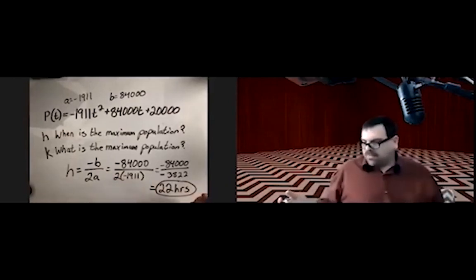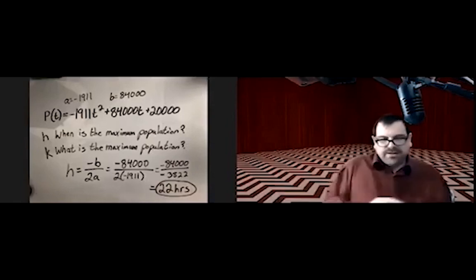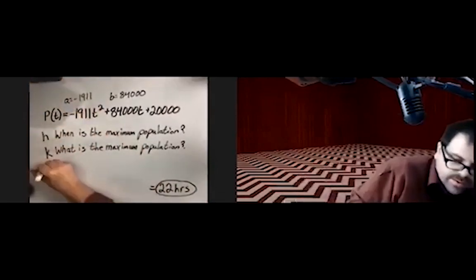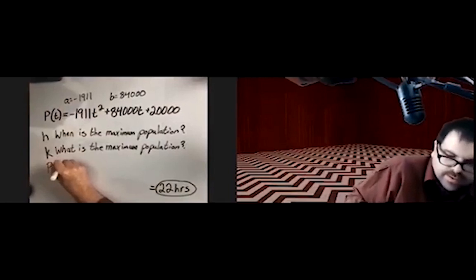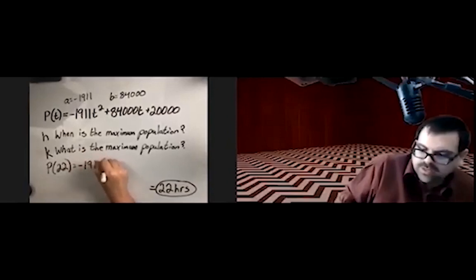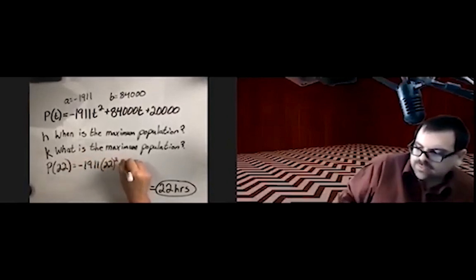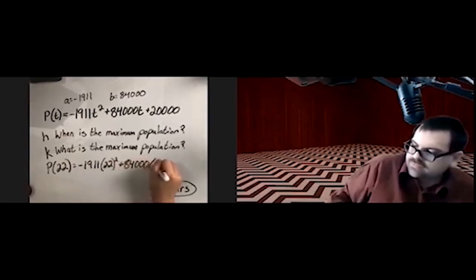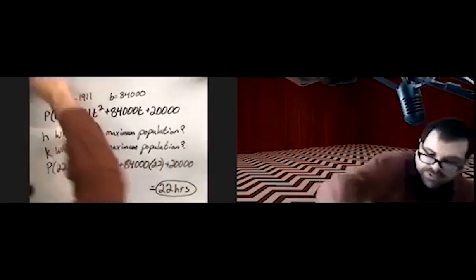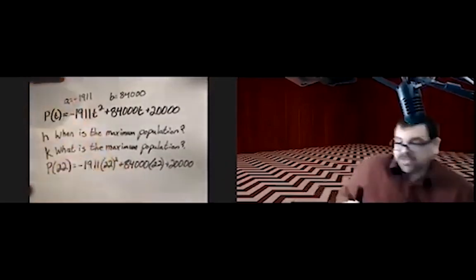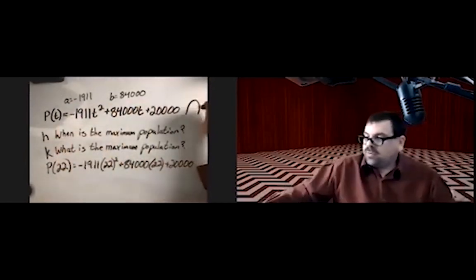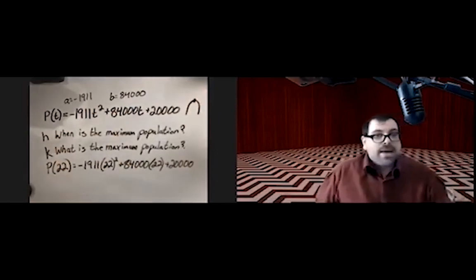What is the maximum population? For that, we would need to find p of 22 — what we get when we plug 22 in. That's negative 1,911 times 22 squared plus 84,000 times 22 plus 20,000. At 22 hours, we get a max population. The reason it's a maximum is because a is negative — it's a parabola opening down, so the vertex is a maximum point.